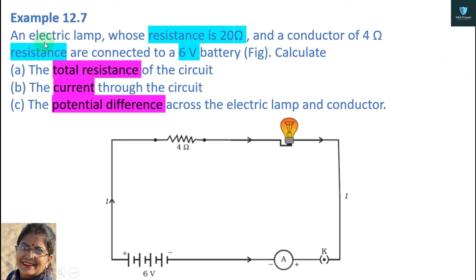Example 12.7: An electric lamp with resistance 20 ohm and a conductor of 4 ohm resistance are connected to a 6 volt battery. We need to calculate three things: first, the total resistance of the circuit; second, the current through the circuit; third, the potential difference across the electric lamp and conductor.